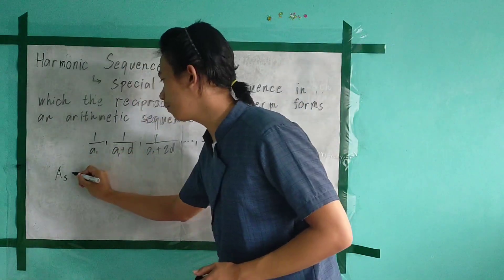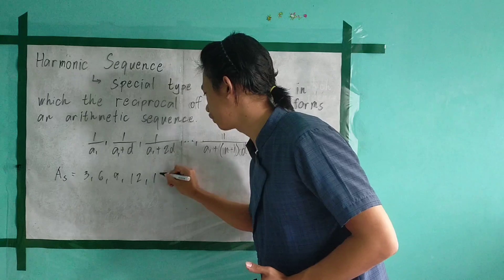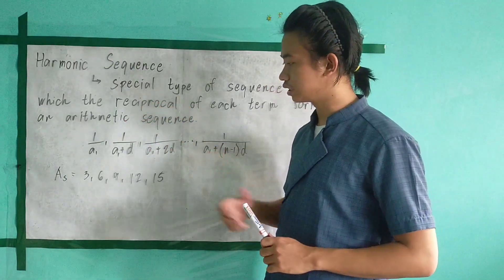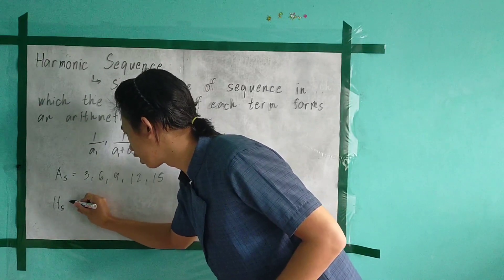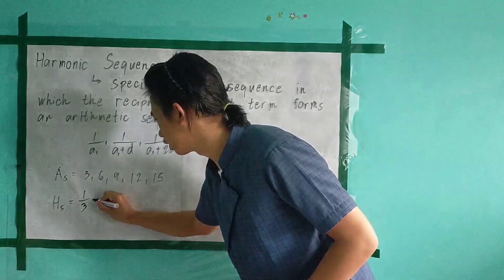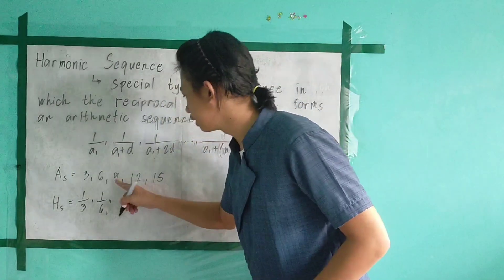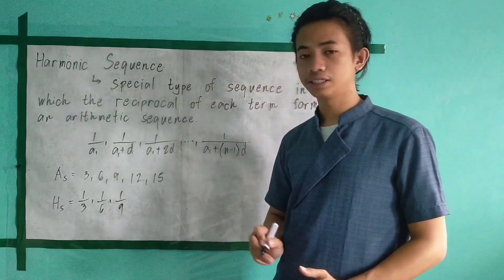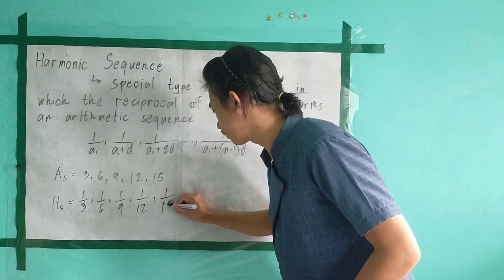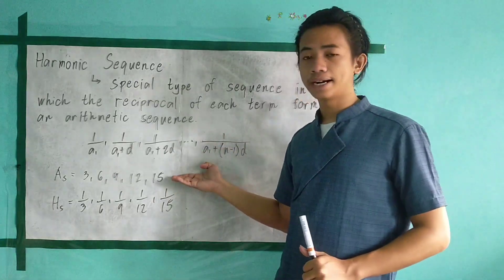Let's consider that we have an arithmetic sequence. Our arithmetic sequence is 3, 6, 9, 12, and 15. To have a harmonic sequence, just get the reciprocal of each term. So our harmonic sequence is: reciprocal of 3 is 1 over 3, reciprocal of 6 is 1 over 6, reciprocal of 9 is 1 over 9, reciprocal of 12 is 1 over 12, and reciprocal of 15 is 1 over 15. That is the relationship between harmonic sequence and arithmetic sequence.